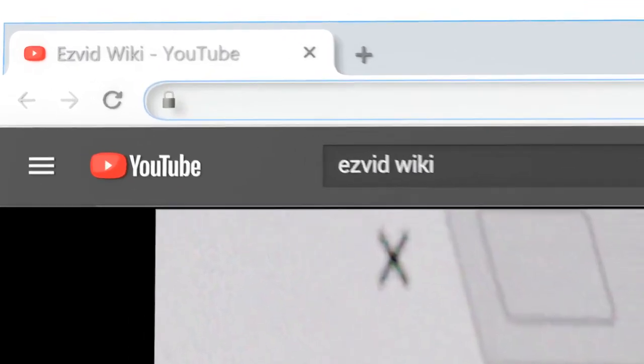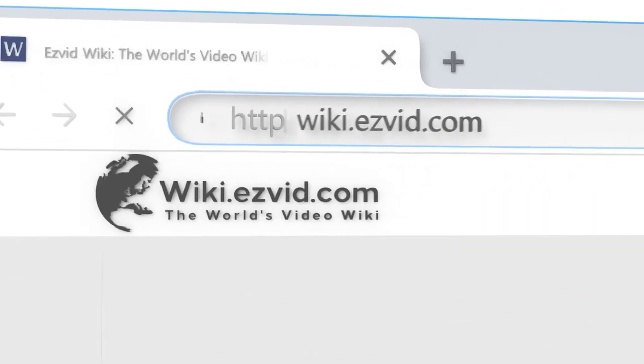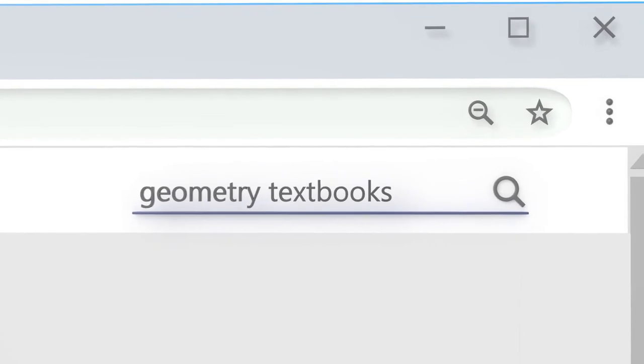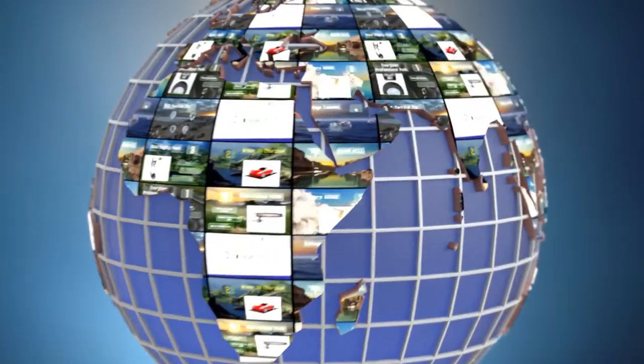Our newest choices can only be seen at wiki.easyvid.com. Go there now and search for geometry textbooks or simply click beneath this video.